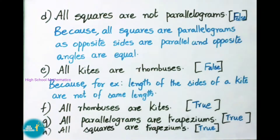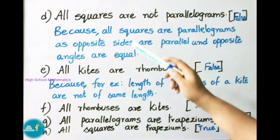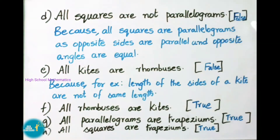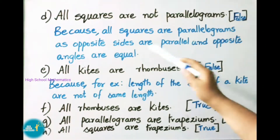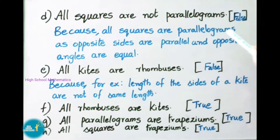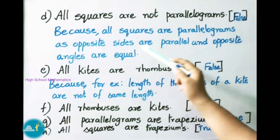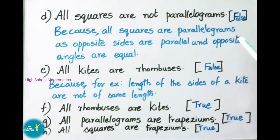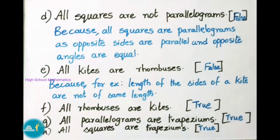Question D: All squares are not parallelograms. The given statement is false. Why? Because all squares are parallelograms as opposite sides are parallel and opposite angles are equal.